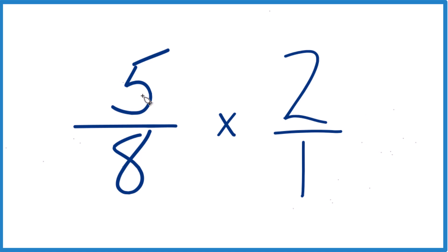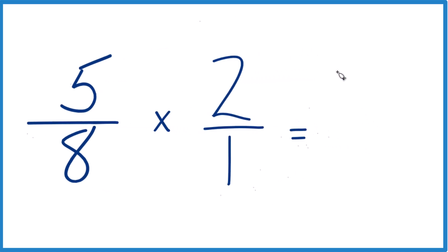And with fractions, what we do is we multiply the numerators. So 5 times 2, that equals 10. And then the denominators. 8 times 1 is 8. We end up with 10 eighths.